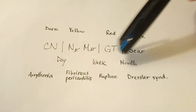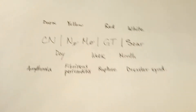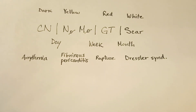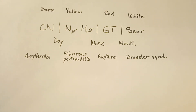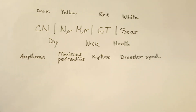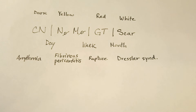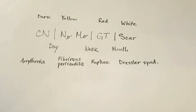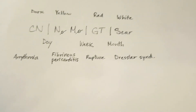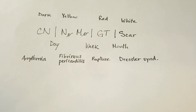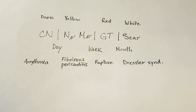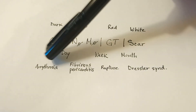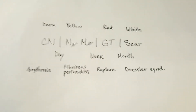Within a week to a month, when you're laying down granulation tissue, your biggest concern is papillary muscle rupture, which can lead to tamponade. After a month, while you're laying down the scar, your biggest concern is Dressler syndrome — basically antibodies to the pericardium leading to pericarditis. You could also see aneurysms and have an increased risk of a mural thrombus.